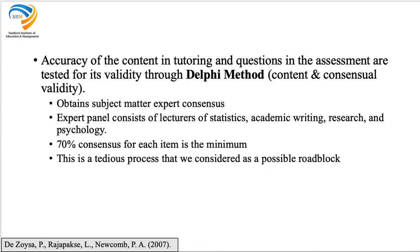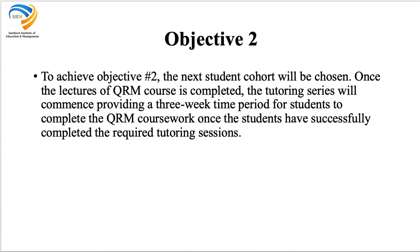We know that because we will be making the 35 questions first and taking them through a validity testing process. We will use the Delphi method to obtain content and consensual validity, consulting subject matter experts. The panel will consist of lecturers of statistics, academic writing, research, and psychology, where for each question we will seek 70% consensus as the minimum. The only potential roadblock is that it is a time-consuming process, but once complete we will have 35 validated questions to use in the tutoring session.